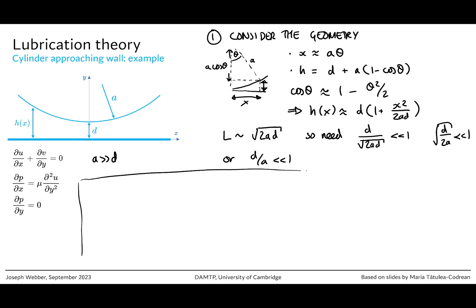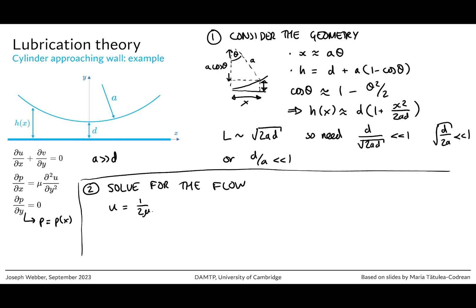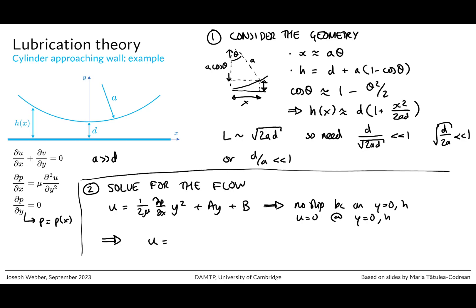Now let's solve for the flow. Since dP/dy equals 0, pressure is just a function of x, so we can integrate the x-momentum equation twice with respect to y. Treating dP/dx as a constant with respect to y, we get u equals (1/2mu)(dP/dx)(y squared plus Ay plus B). Applying the no-slip boundary conditions u equals 0 at y equals 0 and y equals H gives u equals (1/2mu)(dP/dx) y(y minus H).